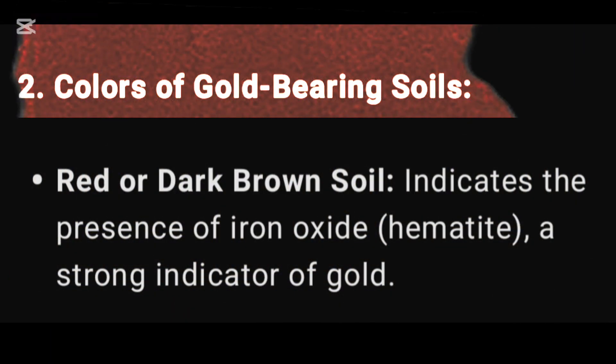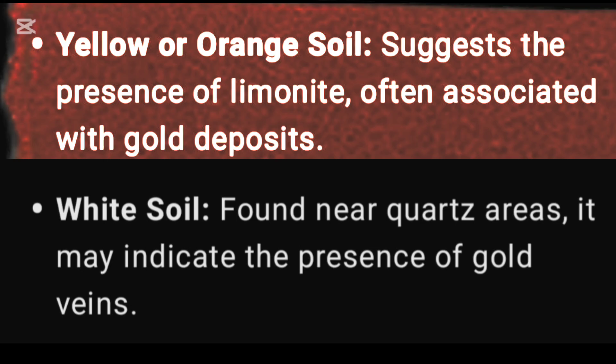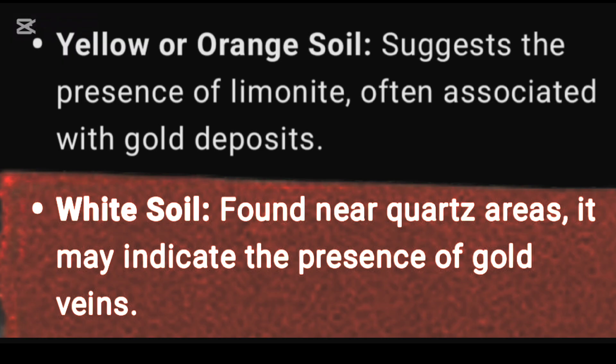Colors of gold-bearing soils: Red or dark brown soil indicates the presence of iron oxide hematite, a strong indicator of gold. Yellow or orange soil suggests the presence of limonite, often associated with gold deposits. White soil found near quartz areas may indicate the presence of gold veins.